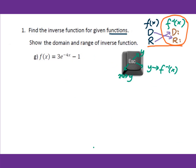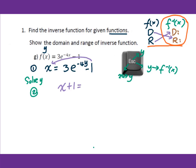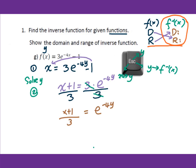Now let's find the inverse of the exponential function. Using the ESC steps, first switch x and y: x equals 3e to the power of (negative 4y) minus 1. Second step, solve for y — isolate the exponential term. Add 1 to both sides: x plus 1 equals 3 times e to the negative 4y. Divide by 3: e to the negative 4y equals (x plus 1) over 3.